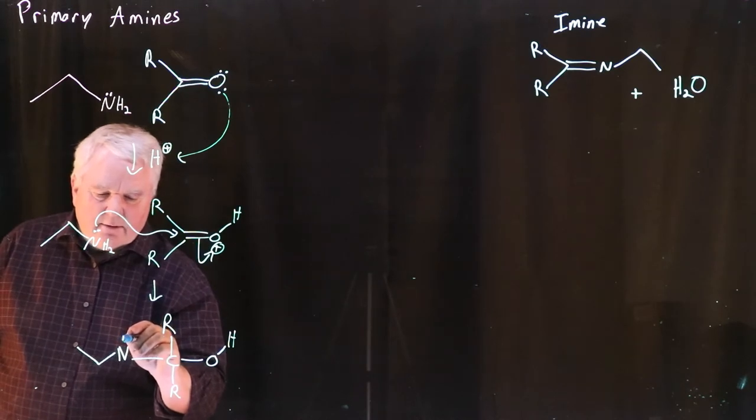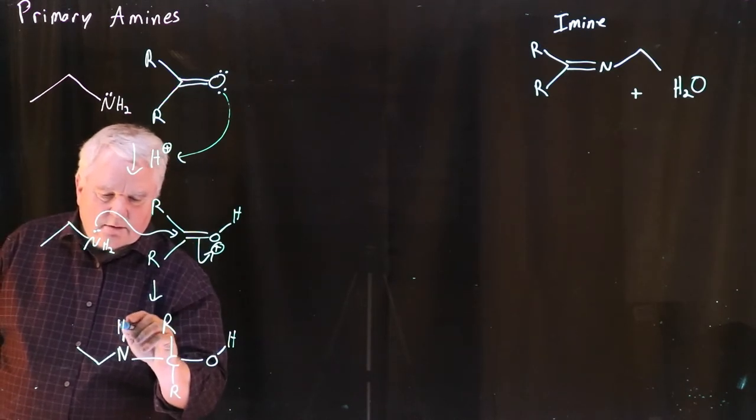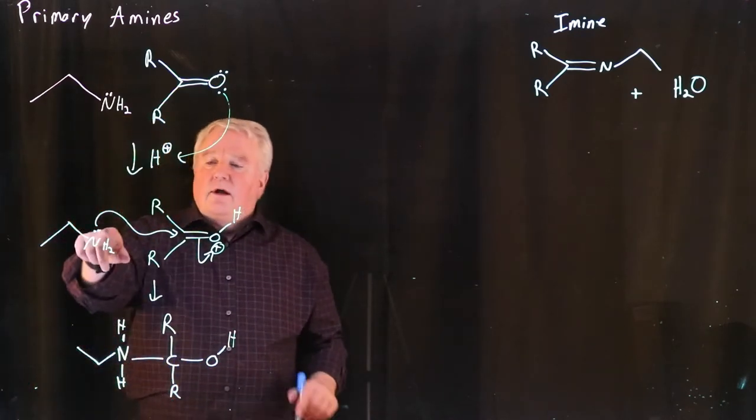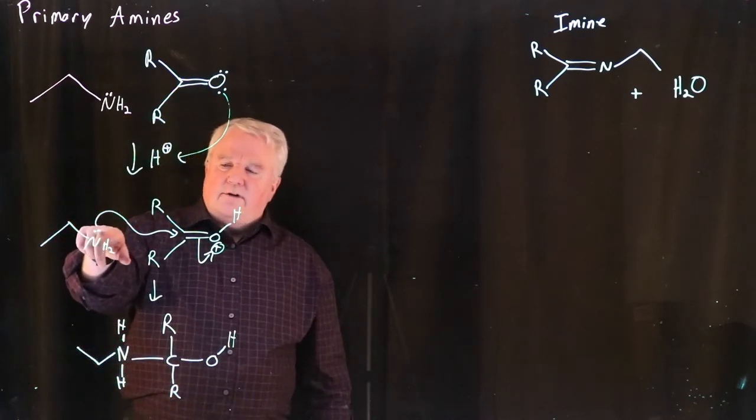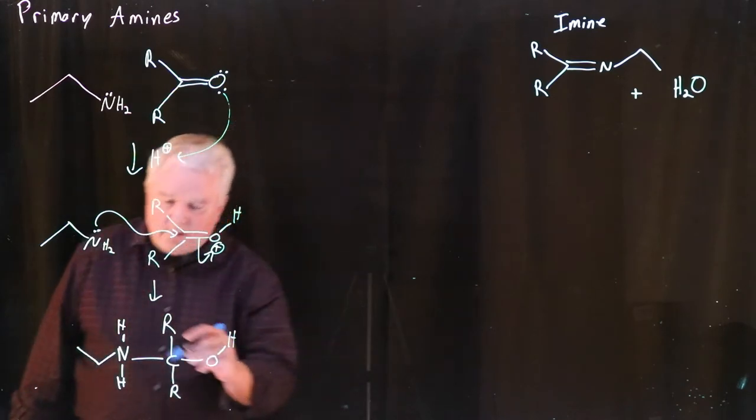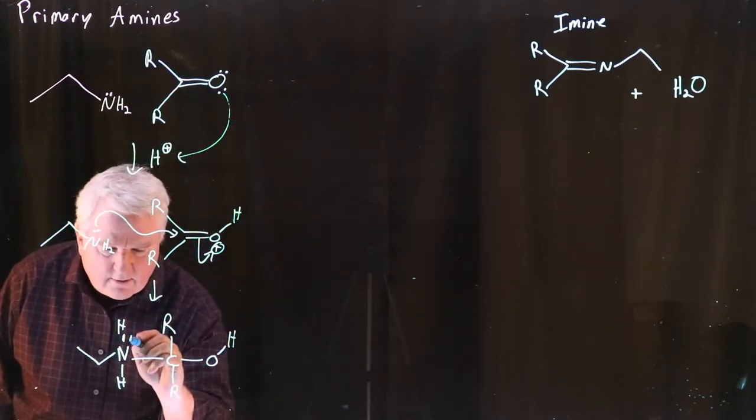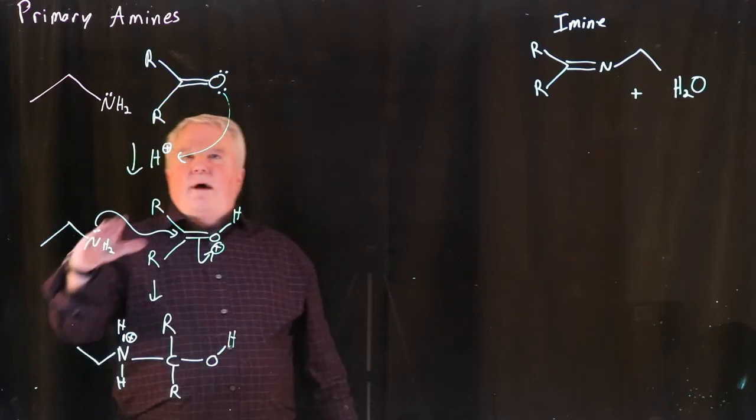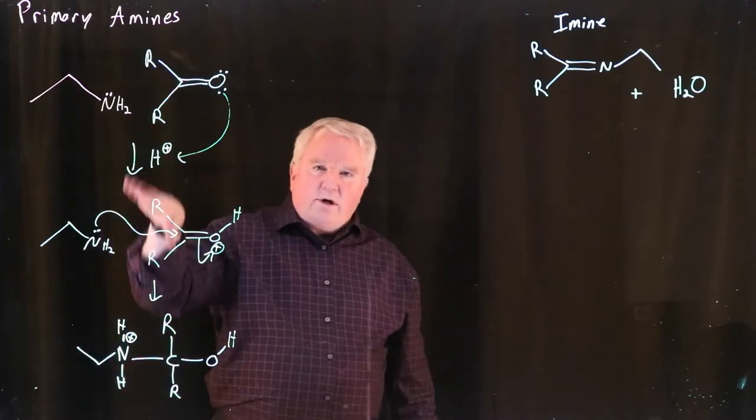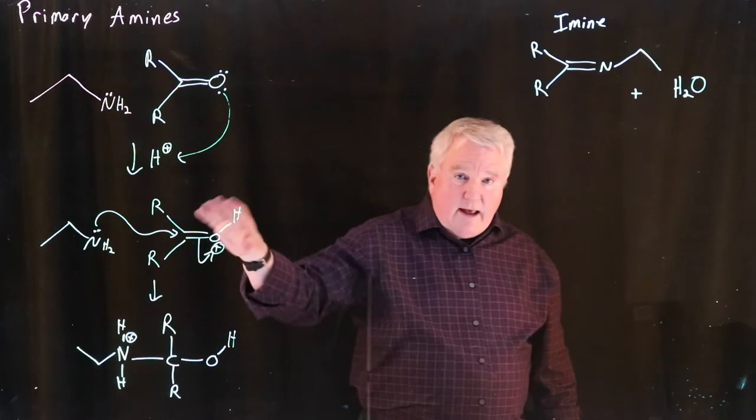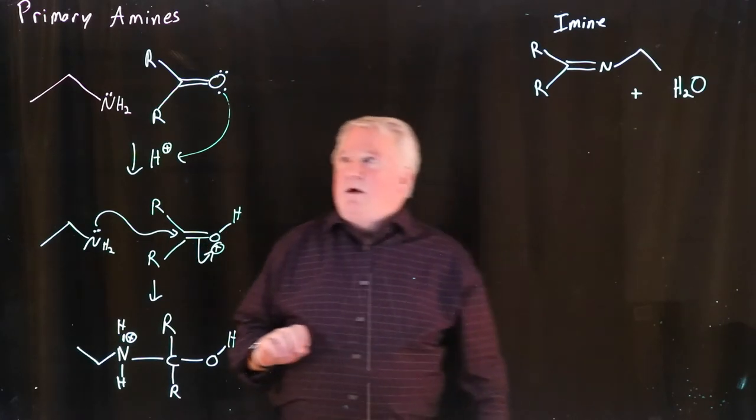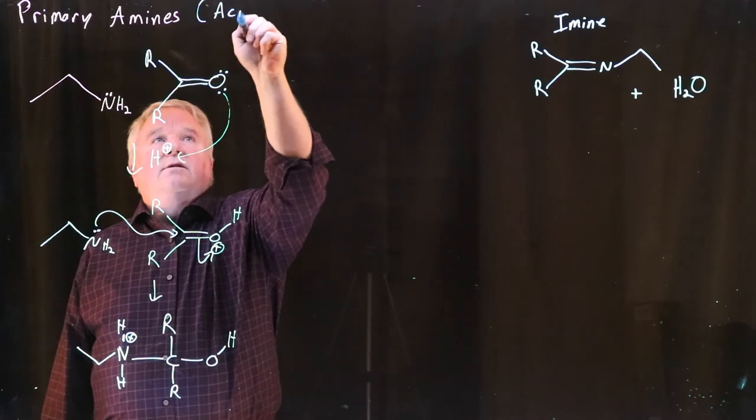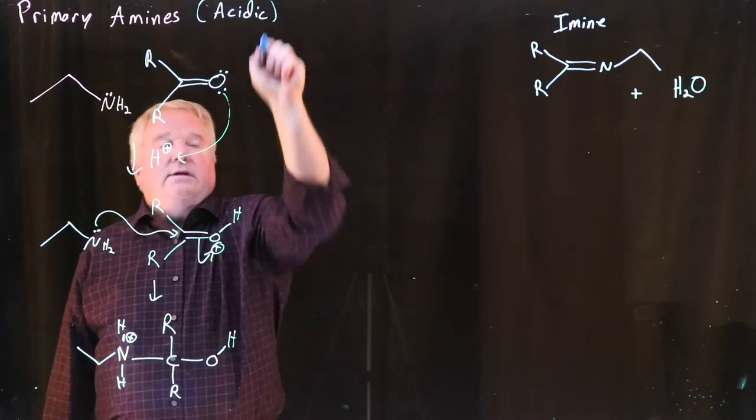And we still have two protons on our nitrogen. We use this lone pair of electrons on the nitrogen to attack the carbonyl compound, so we must now have a positive charge on our nitrogen. Remember, we started with a positive charge. We're going to have a positive charge, net positive charge, throughout this reaction, under acidic conditions. And we are under acidic conditions.